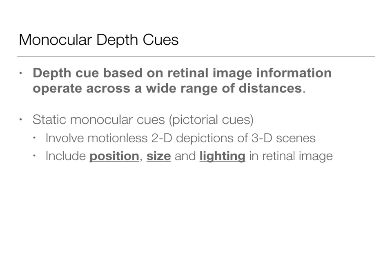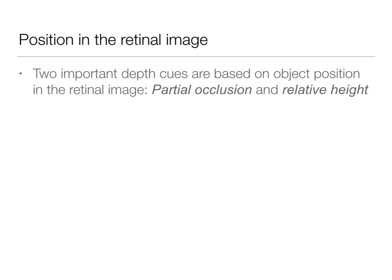In monocular cues, we're still doing 2D depictions of 3D scenes — but these are motionless 2D depictions. We'll talk about dynamic cues that involve movement later. Those three main categories are position, size, and lighting on the retinal image. So first, let's talk about position in the retinal image. There are two main ones: partial occlusion and relative height.